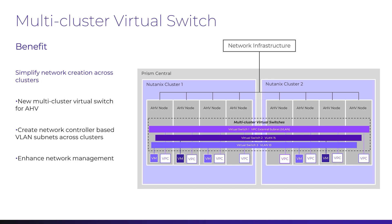PRISM Central managed clusters that share the same network attributes for the uplinks on their nodes can be configured into one PRISM Central multi-cluster virtual switch. The multi-cluster virtual switch can then be used to create network controller-based VLAN subnets, which will span all the member clusters of the virtual switch. This benefits multiple use cases that we'll cover next.